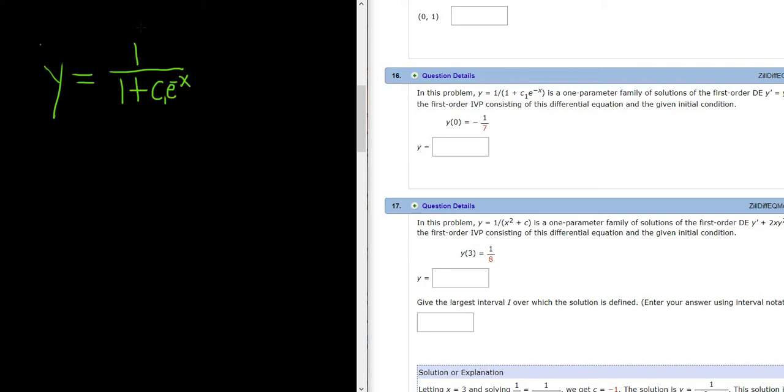This is called a one-parameter family of solutions, and the reason is you have one parameter—c1 is your parameter. So this is actually infinitely many solutions; there's a solution for various choices of c1.